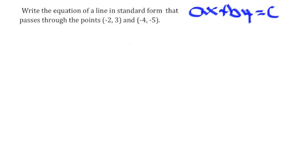In today's video, we're going to write the equation of a line in standard form that passes through the points negative 2 comma 3 and negative 4 comma negative 5. I've gone ahead and written standard form on the right-hand side for you. What I want you to notice is that a, b, and c are all just numbers. The x and the y stay x and y.